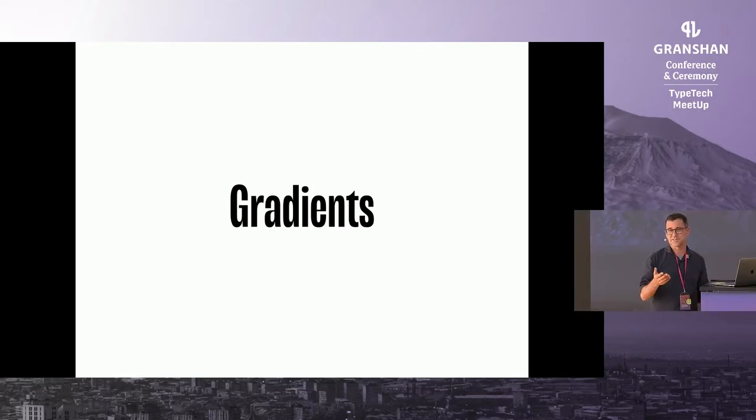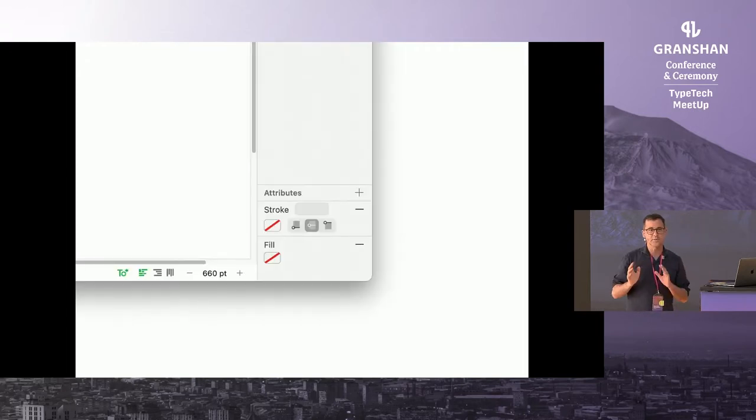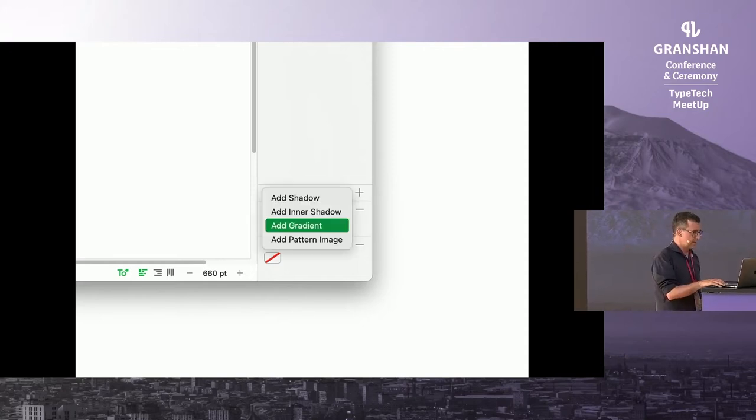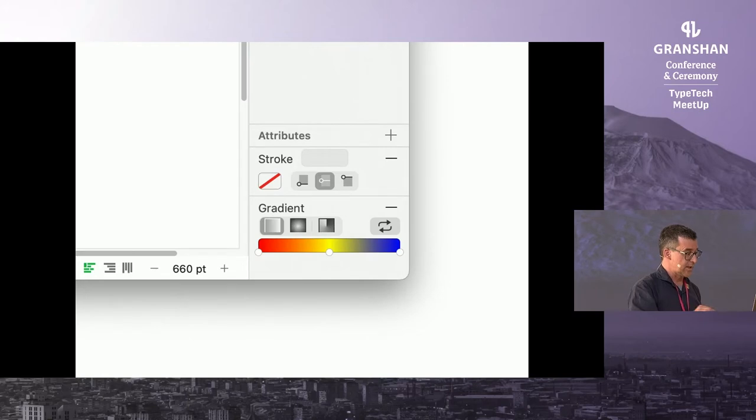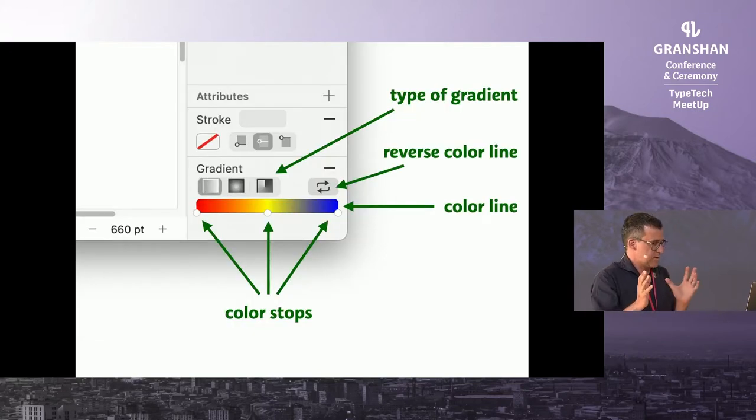One thing it still doesn't do, but that was the second most requested thing by users, is shadows. No, sorry, no shadows, but we can do gradients. Yes, the way you do that in glyphs, you select an object. To some extent this already works in the current version of glyphs, and you add a gradient to the attributes of the object. If you're on a color layer, then you get extra things like shadow, shadow gradient, and pattern image even.